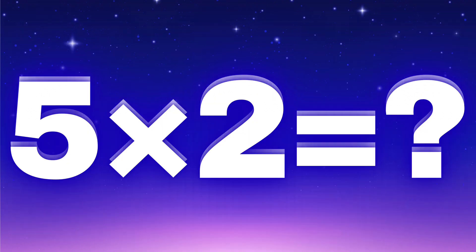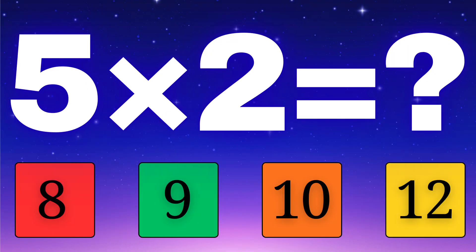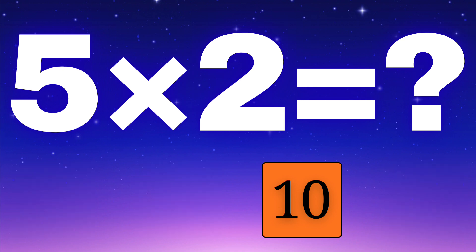Can you guess this one — what is five times two? Let's check the options: is it eight, nine, ten, or maybe twelve? Think carefully. The correct answer is ten. Great start — five times two equals ten.